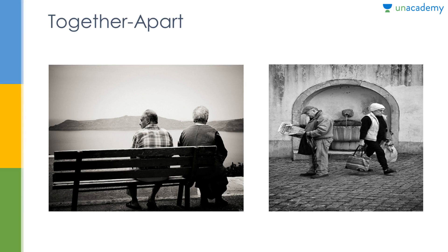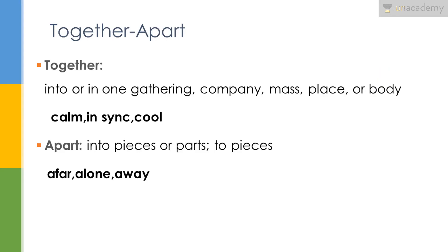The next pair of words are together and apart. Together means being with someone — when two people are companions to each other and supporting each other through all the thick and thin. Apart is when two people separate, when they become distanced and a gap forms between them, for any reason. Together is basically into or in one gathering, company, mass, place or body. The synonyms of the word together are calm, in sync, and cool. For example, you can say the talks you are going to present in the debate today are in sync with the local audience.